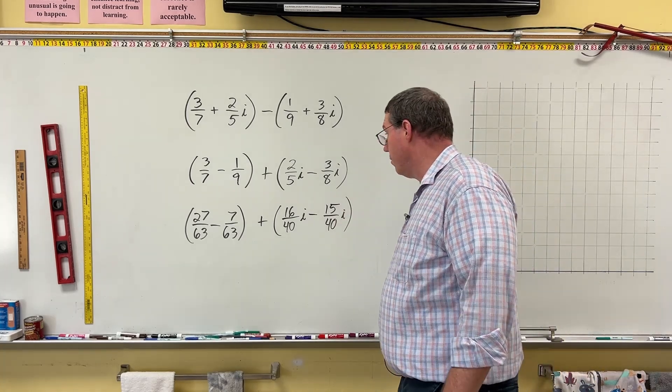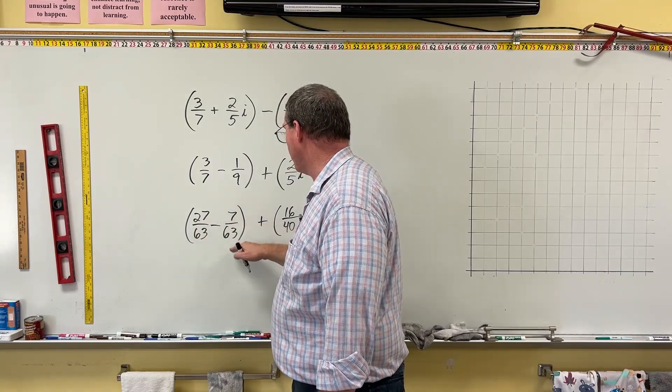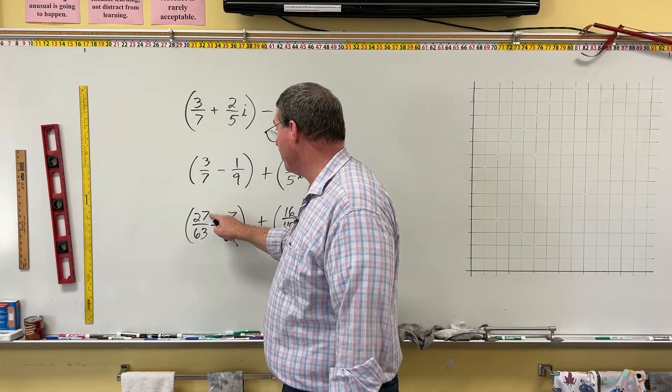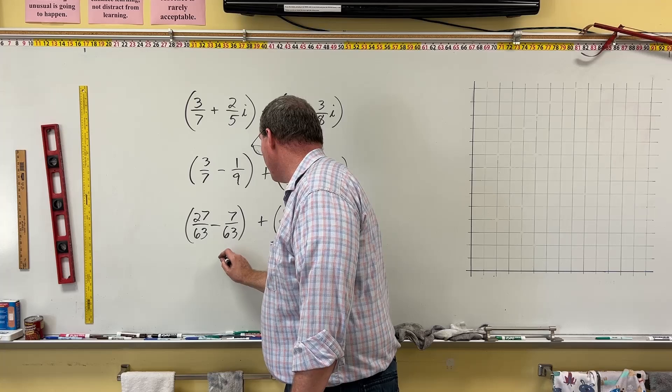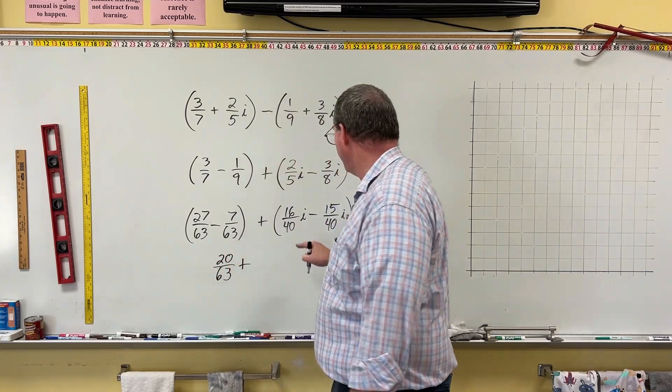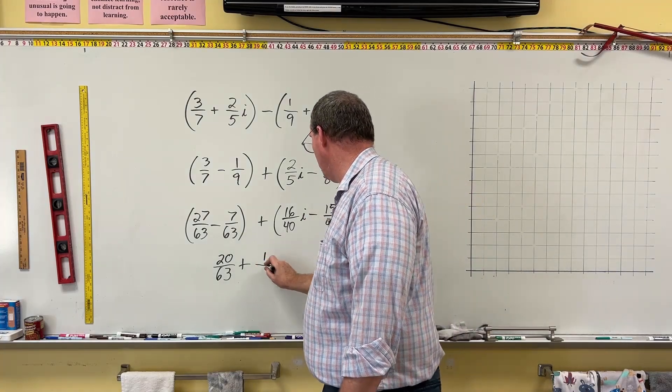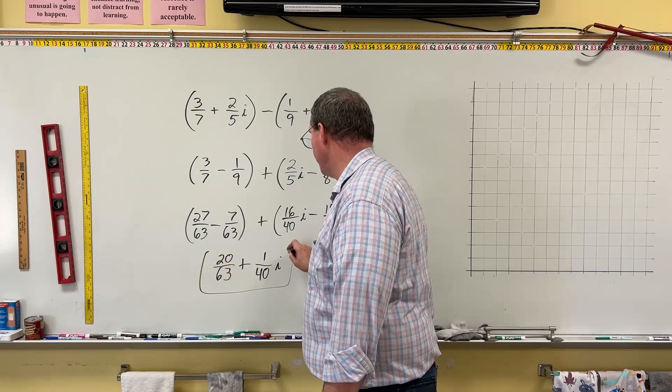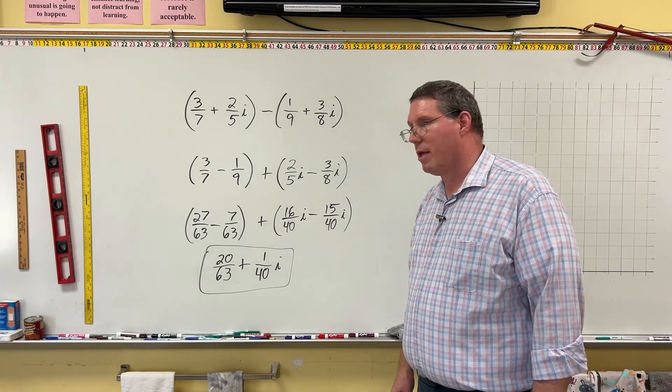Now we just have to subtract here, 27 over 63 minus 7 over 63. Now the 63 is just the common denominator, it goes along for the ride. So really we're doing 27 minus 7. 27 minus 7 is 20, and that's over 63, plus. And then we have the 16 minus 15 is 1, 1 over 40. And then i, and this is actually our answer, that is a complex number, 20 over 63 plus 1 over 40i.